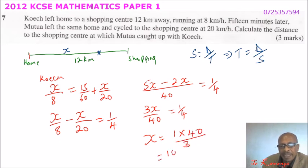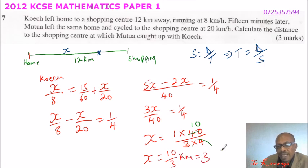This will give you 10 over, okay, here we have 4. So, you can simplify here and say this is 10. So, it means that our X equals to 10 over 3 kilometers, which is equals to 3 and a third kilometers. So, it means that Mutua caught up with Koech 3 and a third kilometers from the time Koech started the journey.